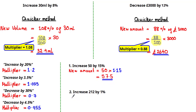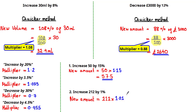Next, increase 212 by 1%. Because we're increasing, we take 101% of 212, obtained by adding 1% to 100%. The new amount is 212 times the multiplier 1.01, the decimal equivalent of 101%. Using the calculator gives an answer of 214.12.